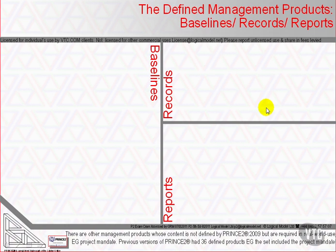The project will create many products. Imagine, for example, that the project's goals are to open a new bakery. Some products will be ovens and advertising materials. Others will include recruited and trained staff, contracts with suppliers and installed mixing machines.